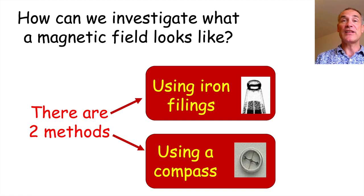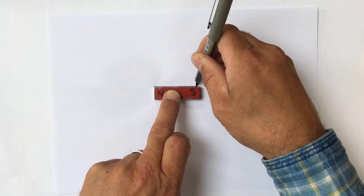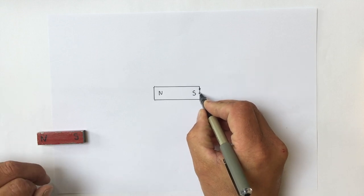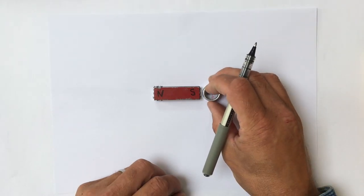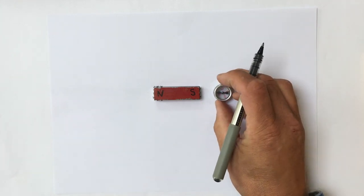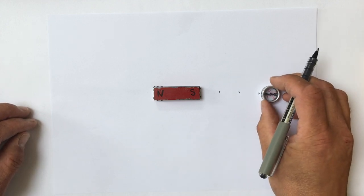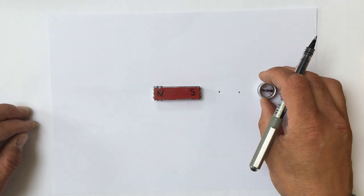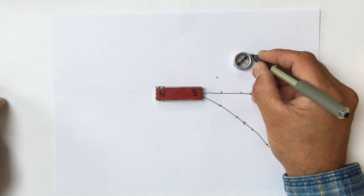So how do we use a compass to actually plot magnetic field lines? First you draw around the magnet and label it north and south. Then you mark crosses around the magnet. I put my magnet back and place a plotting compass next to one of the crosses. I mark where the compass is pointing to show the direction of the field, then move the compass to the next cross — using the compass to plot where the magnetic field lines are going. The compass needle is pointing towards the south pole. I then join those lines up and put an arrow to show the direction in which the field goes.